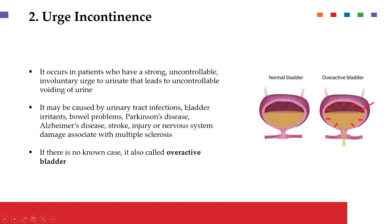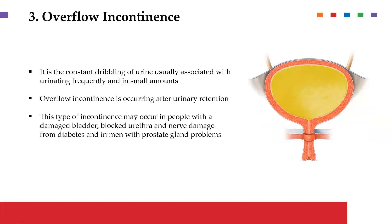Urge incontinence is where we have an uncontrollable, involuntary urge to urinate. The bladder is contracting in an uncontrollable and unsynchronized manner, causing the urge to release urine. This is sometimes referred to as an overactive bladder when the exact cause is unknown. One prominent cause is infection, which can lead to irritation of the bladder and result in an overactive bladder.